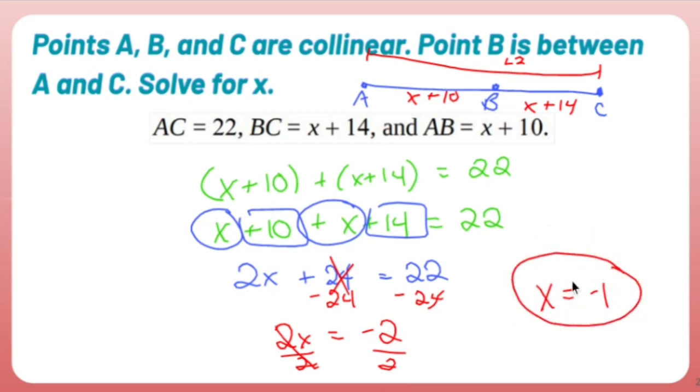Now you might be thinking, no, no, no, no, no, no, no. You can't have a negative length. This isn't a negative length. This just gives us an X. So if I wanted to find what these lengths are, I could be like, well, this is going to be negative 1 plus 10, 9. And this is going to be negative 1 plus 14, 13. And 9 plus 13 is 22. So weird answer, especially for geometry when you want to stay away from negatives. But this is the answer and I'm sticking to it.